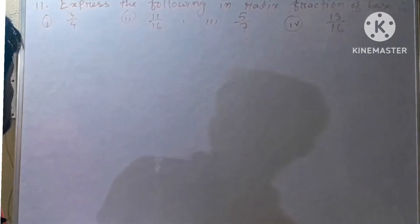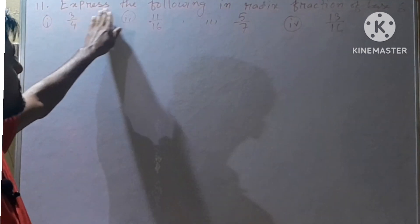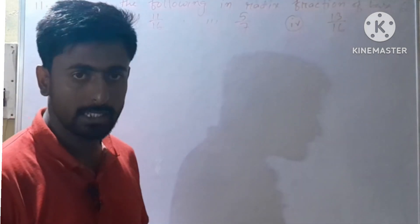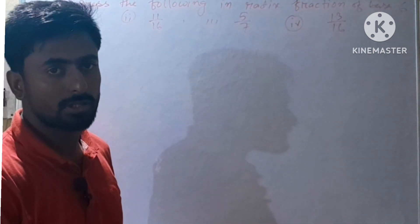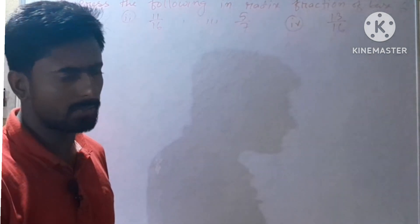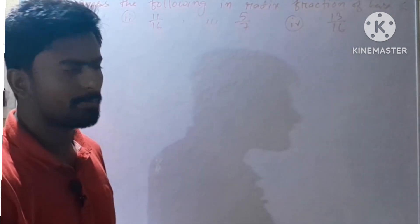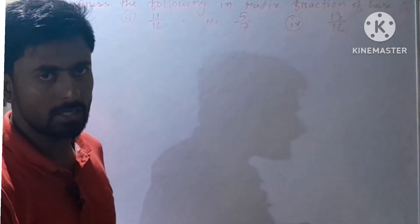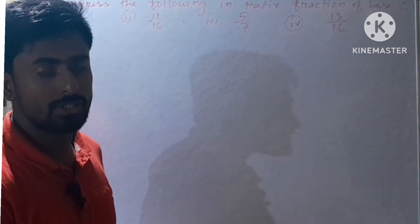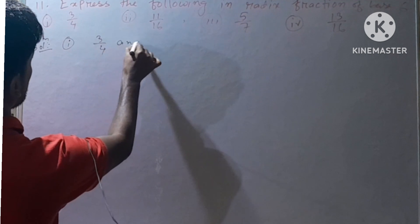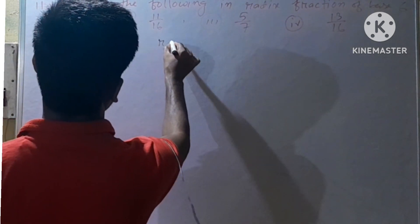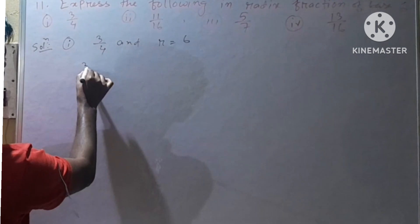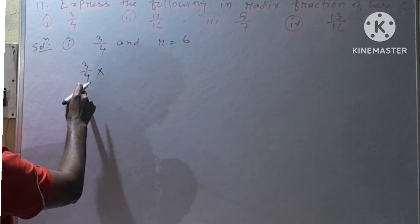Next question is question number 11. The question says: express the following in radix fraction of base 6. To convert a fraction to a radix fraction, we use the method of multiplying by the base. The base here is 6, and we convert each given fraction accordingly.